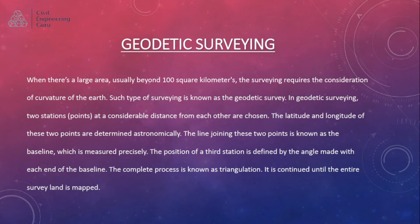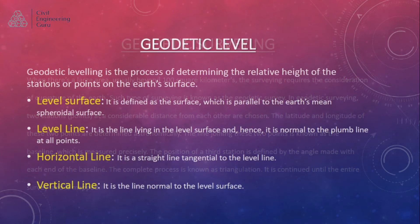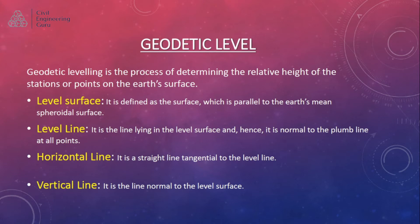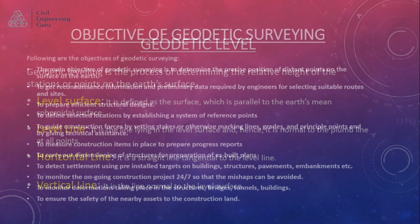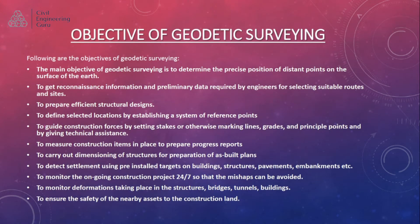Geodetic leveling is the process of determining the relative height of stations or points on the earth's surface. Level surface is defined as the surface which is parallel to the earth's mean spheroidal surface. Level line is the line lying in the level surface, and hence it is normal to the plumb line at all points. Horizontal line is a straight line tangential to the level line. Vertical line is the line normal to the level surface.